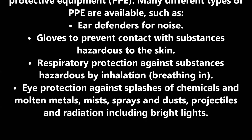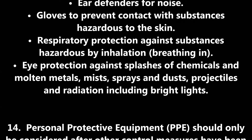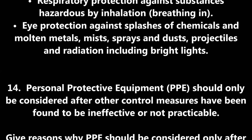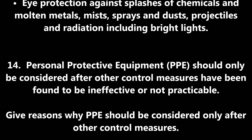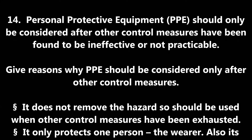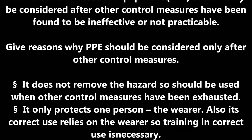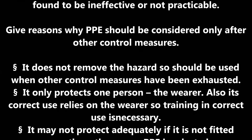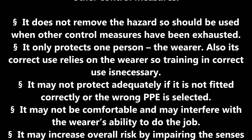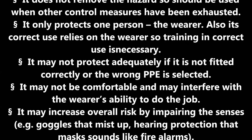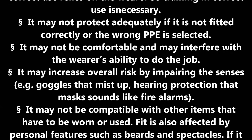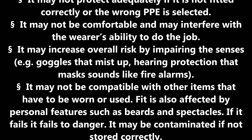Administrative controls are those that rely on procedures and behaviour, such as safe systems of work — a formal procedure which defines a method of working that eliminates hazards or minimises associated risks. Safe systems of work are necessary whenever hazards cannot be physically eliminated and some element of risk remains. Another administrative control is reduced time of exposure: many health hazards cause harm dependent on the dose received, for example noise, vibration, radiation and hazardous chemicals such as lead — the harm to hearing caused by loud noise is determined by noise intensity in decibels and duration of exposure.